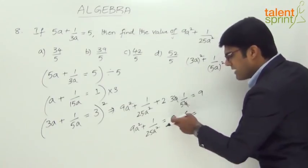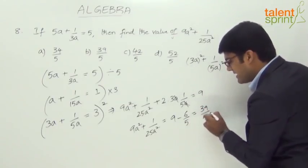Now what is 9 minus 6 by 5? 5 into 9 is 45. 45 minus 6 is 39. 39 by 5.